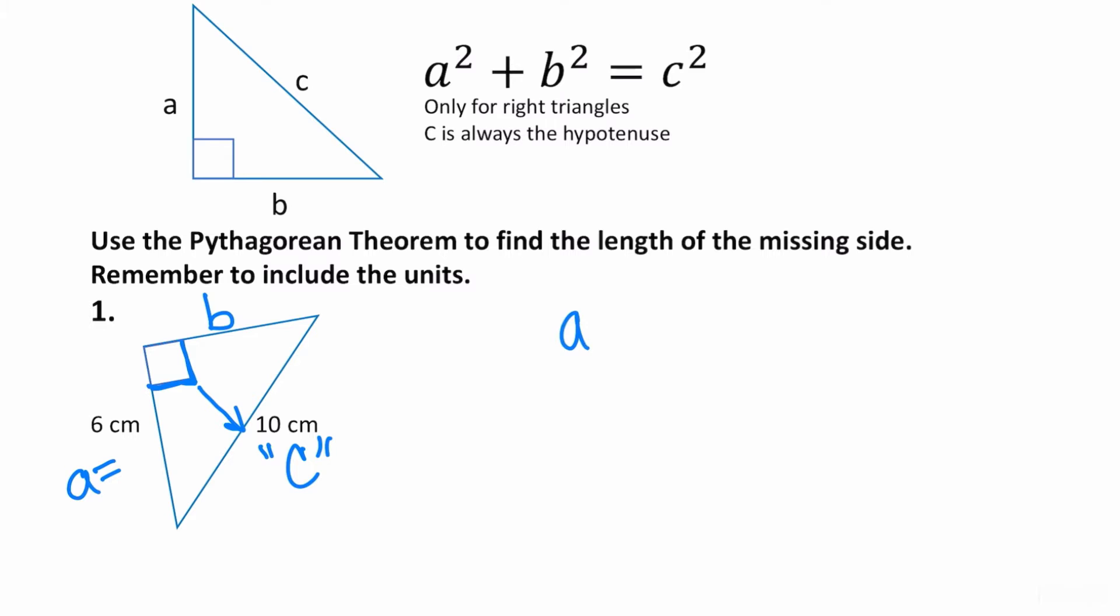So A squared plus B squared is equal to C squared. So that means 6 squared if I substitute plus B squared. Now be careful here because notice how the 6 and the B, believe it or not a lot of times you confuse your own handwriting. So make sure the 6 looks like a 6 and the B looks like a B. And this is going to equal to 10 squared. 6 squared is 36.